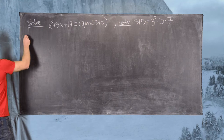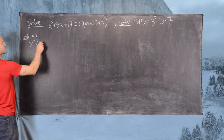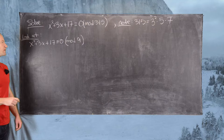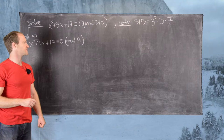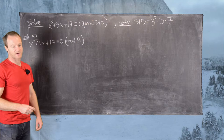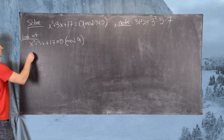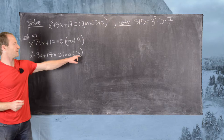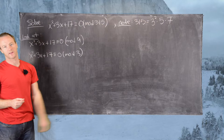We want to look at x squared plus 3x plus 17 congruent to 0 mod 9. That'll be the most complicated one, so we'll tackle it first. Since 9 is a power of a prime and not a prime itself, there's a little more to solving this congruence than there will be for mod 5 or mod 7. So first, we'll look at x squared plus 3x plus 17 congruent to 0 mod 3. It's important that 3 is the power of the prime one less than 9.